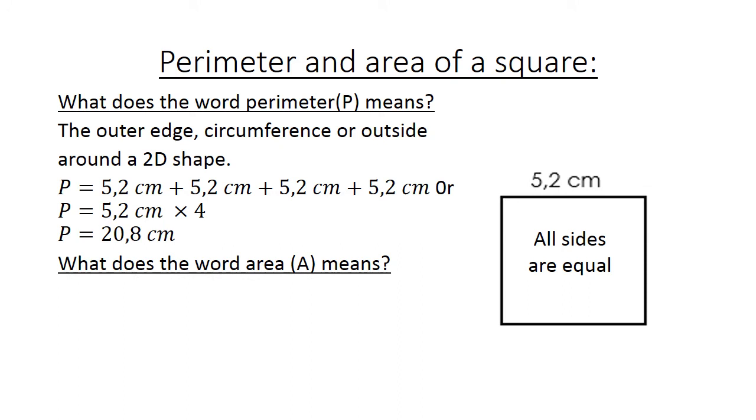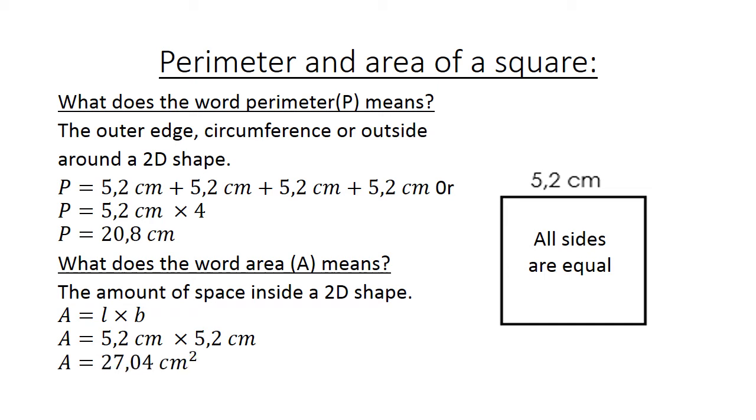What does the word area mean? The amount of space inside a 2D shape. Area equals length times breadth. Equals 5.2 cm times 5.2 cm equals 27.04 cm square.